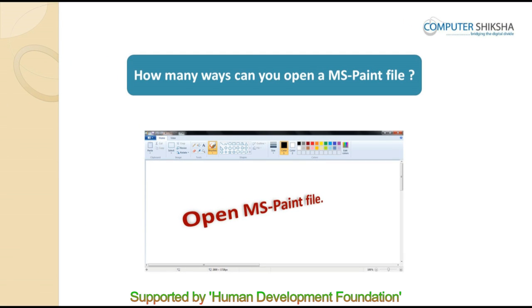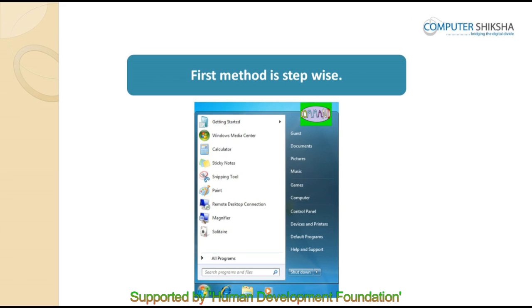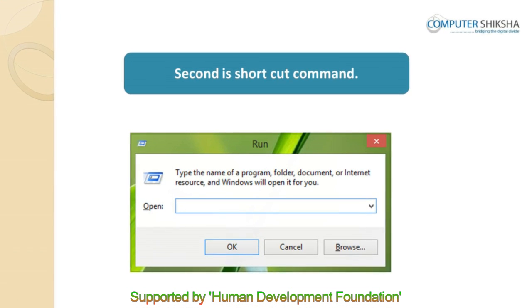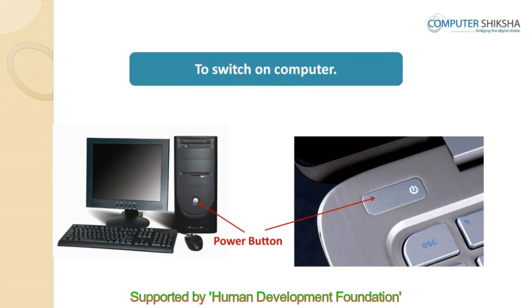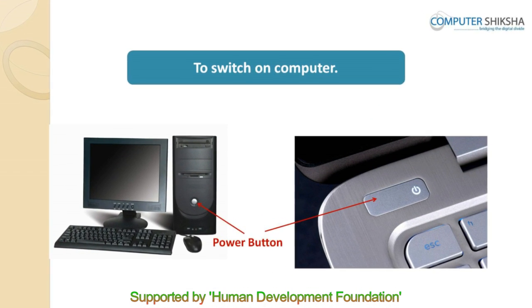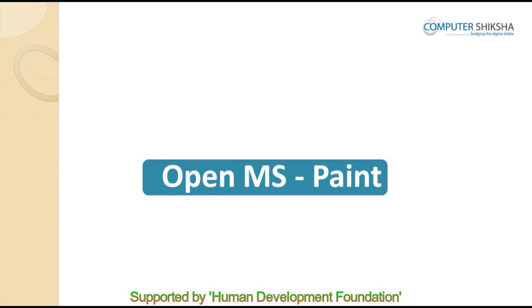In how many ways can you open an MS Paint file? You can open an MS Paint file in two ways: step-wise or by using a shortcut command. So now all of you, go ahead, turn on your computers and using the method taught to you, open the MS Paint file.